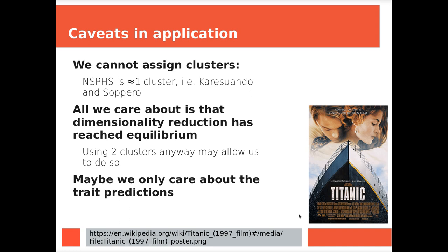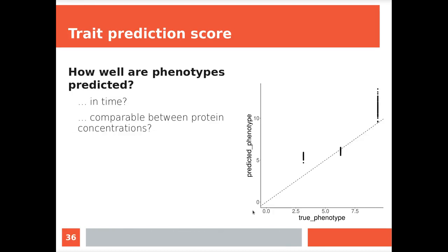But on the one hand, maybe we only care about the trait predictions anyway. Like we know that the trait predictions piggyback on the dimensionality reduction. Like we need to have a solid dimensionality reduction before the trait predictions make sense. But maybe we don't care about the dimensionality reduction too much. And that's why I put the Titanic in here. Like if you go to the movie Titanic, it's not about the ship. You don't see the engine room at all, it's mostly about the humans.